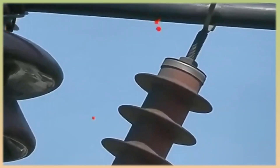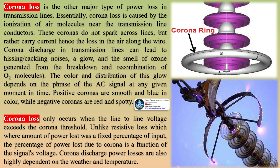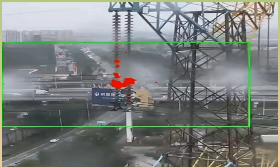Corona rings play a critical role in controlling corona discharge and optimizing the performance of high-voltage transmission lines. Corona loss occurs when energy is dissipated as a result of the corona effect, manifesting as heat and light energy due to the ionization of air surrounding the conductors. Corona loss is a major type of power loss in transmission lines, caused by the ionization of air molecules near the conductors. These coronas do not spark across lines, but rather carry current, hence causing loss in the air along the wire.